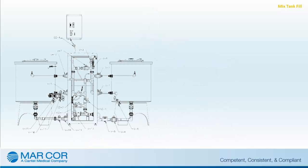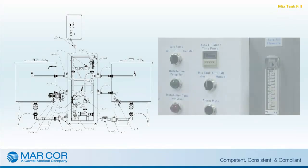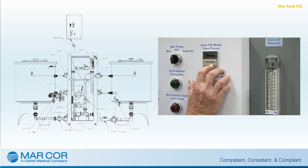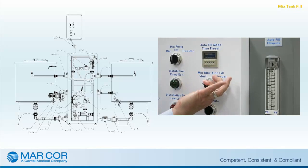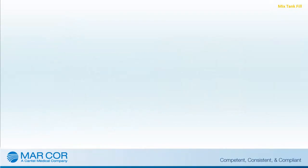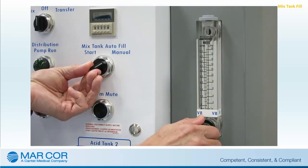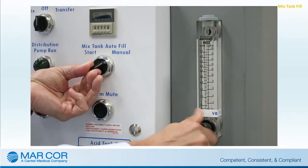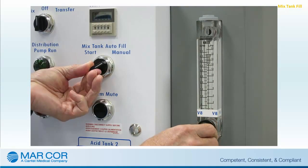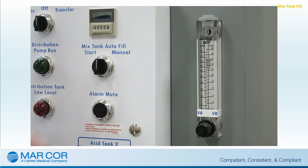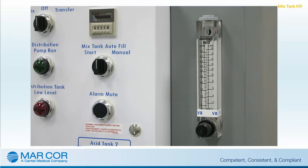To perform the mixed tank fill procedure, the operator will need to ensure that the valves are in the correct positions and the timer has been set for the correct time period to allow water to fill the mixed tank to the correct level. Adjusting the autofill flow rate and then setting and activating the autofill timer will fill the tank with water. The inlet water solenoid valve will automatically close when the timer reaches zero. Set the autofill flow rate between 0.5 to 5 gallons per minute. This rate will vary from facility to facility and will depend upon the amount of extra water produced by the RO after the demands of the hemodialysis delivery systems have been met.